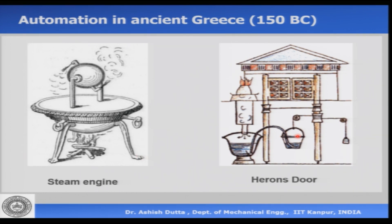Similar principles were used in the automatic closing and opening of doors. This is another example called Heron's Door, again 150 BC. They would burn fire on a container, which would heat up the air inside, increasing the air pressure. As the air pressure increases, it forces the water down through a pipe into another bucket which is suspended. When the water level increases, its weight causes a pulley to rotate, opening the door. When you extinguish the fire, the door closes. This is the earliest example of automation — doing a task without human muscular intervention.